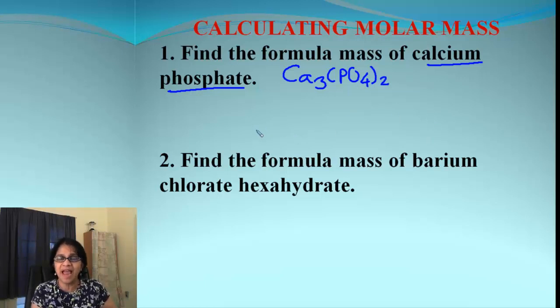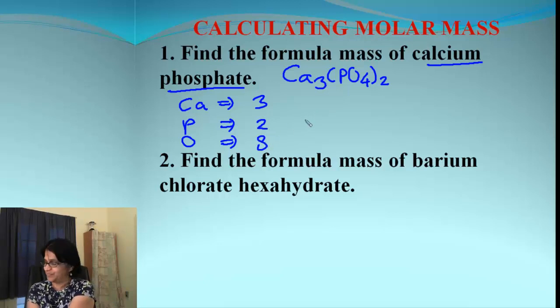The next thing is we need to find out how many atoms of each element are present in the molecule. So we have calcium, phosphorus, and oxygen - three different atoms. If you look in the formula, we have three atoms of calcium, two for phosphorus, and then we have eight for oxygen.